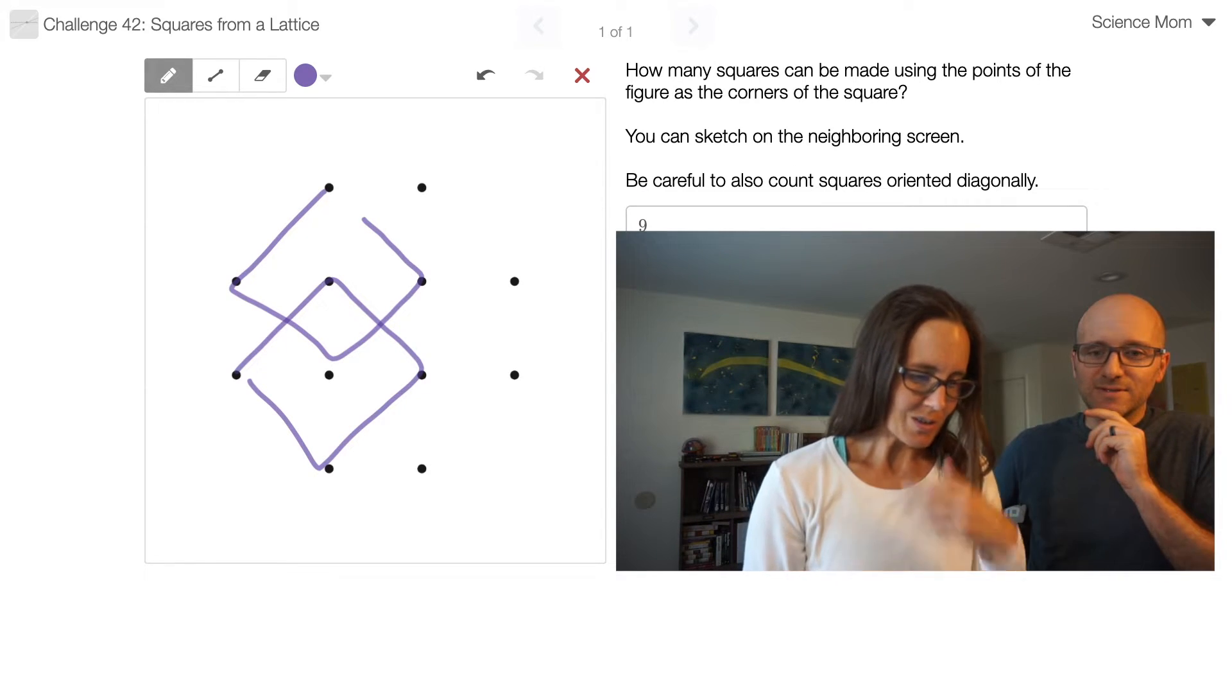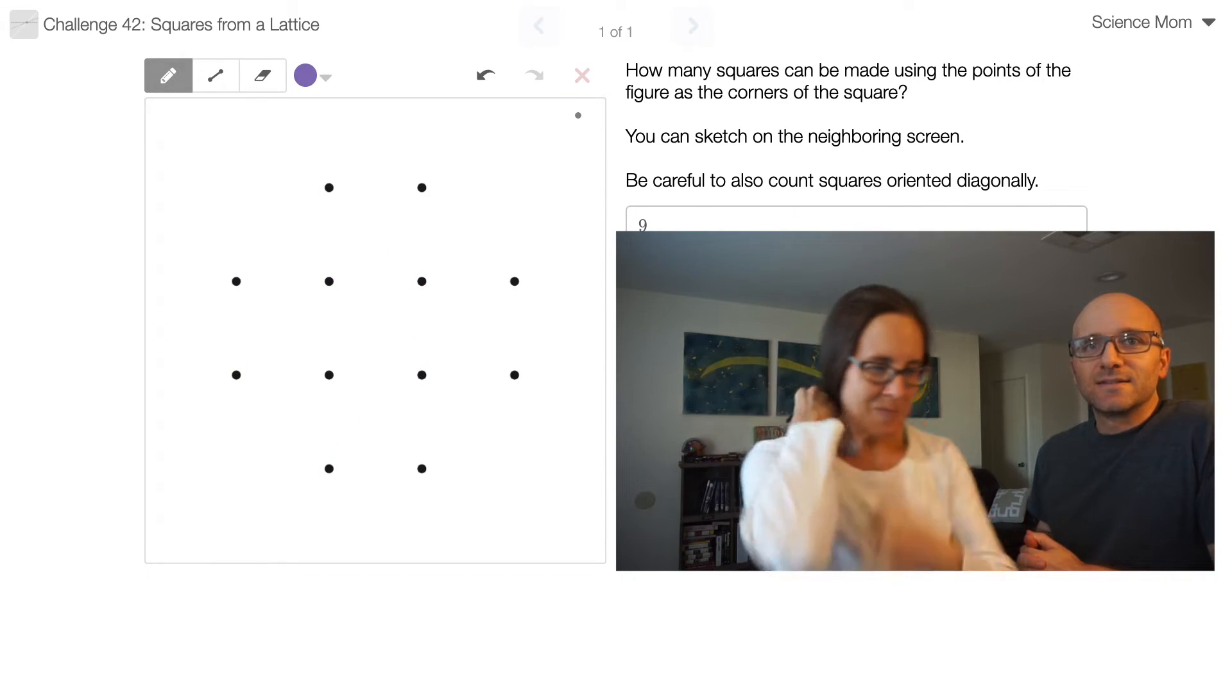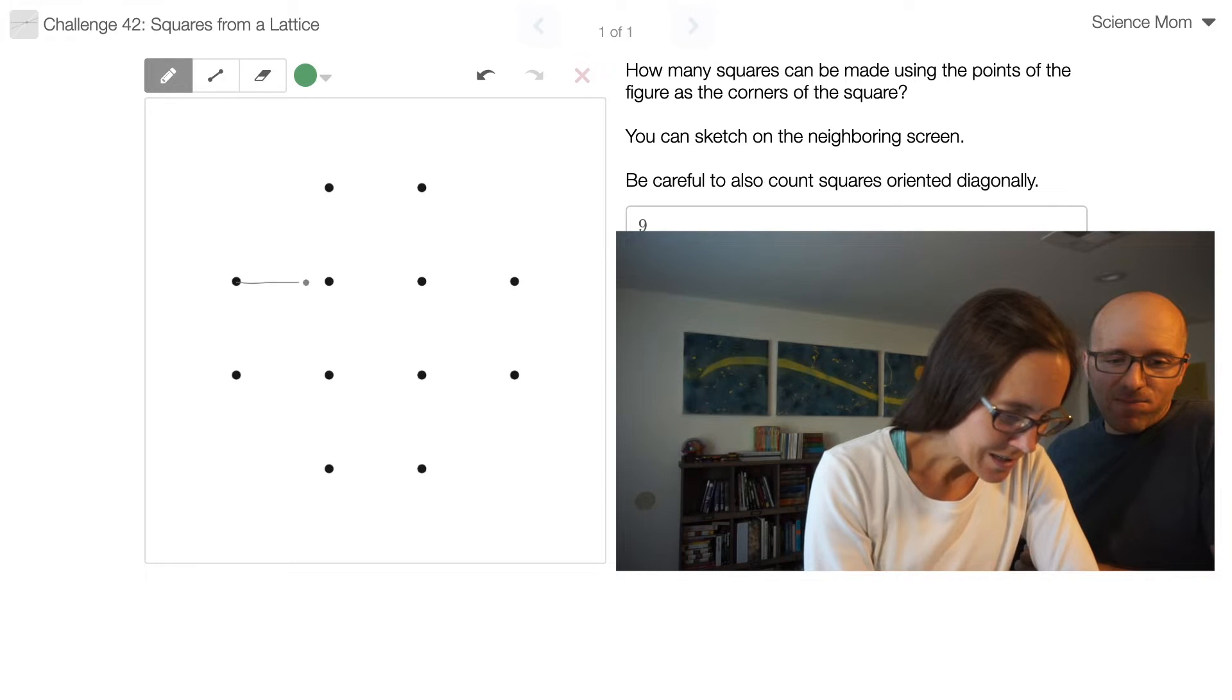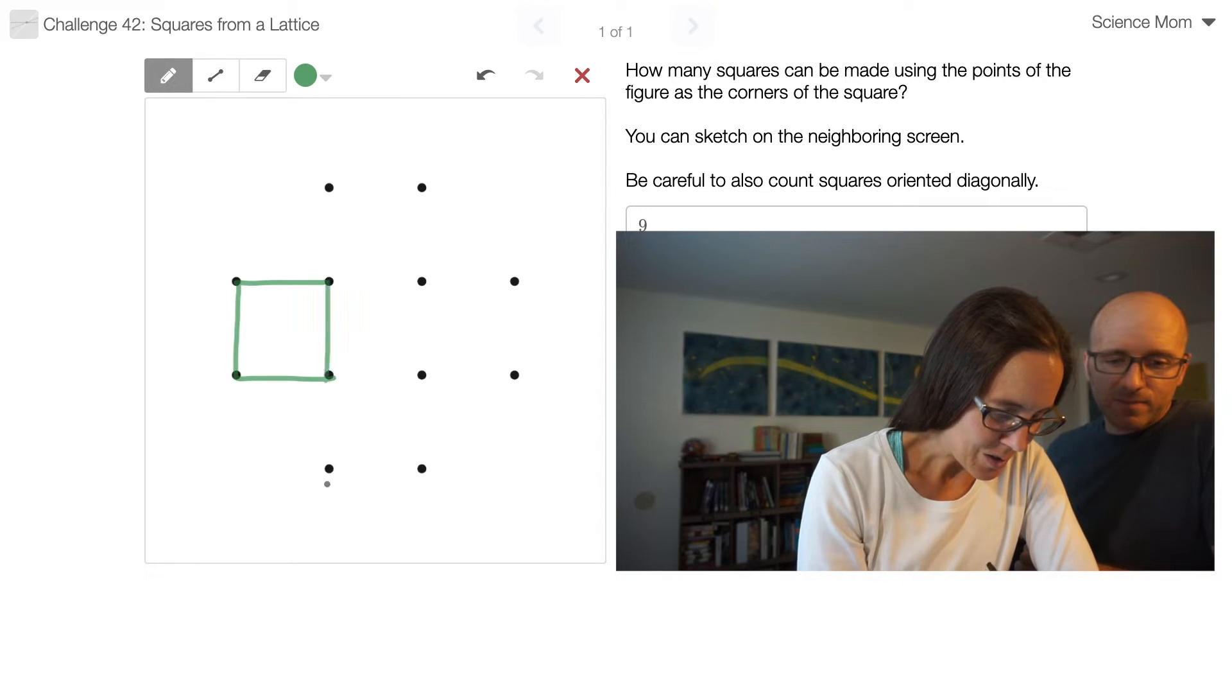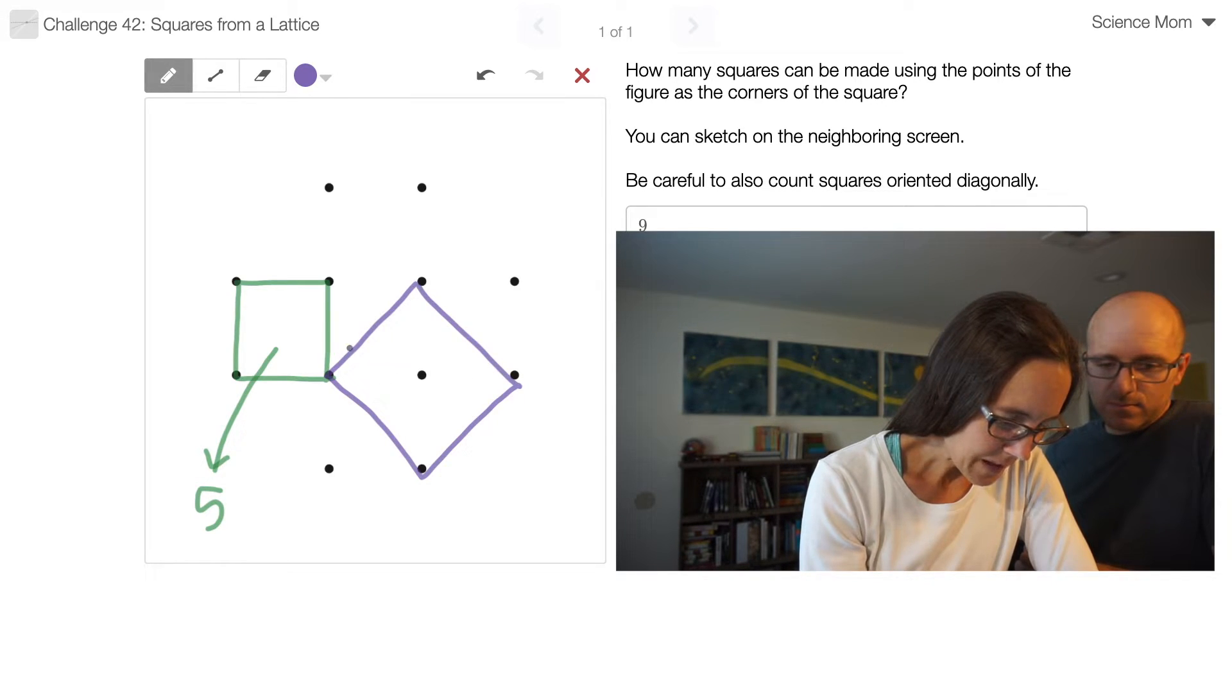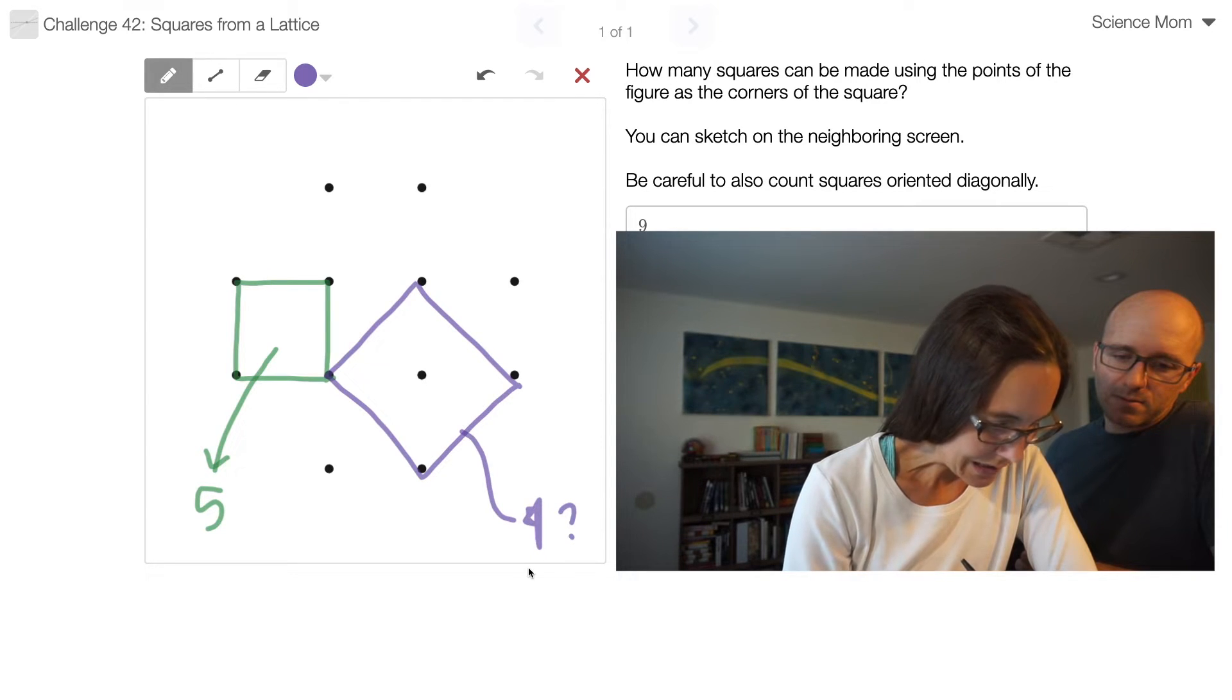Be careful to also count squares oriented diagonally. Okay. You don't get to tell me the answer yet. Let me puzzle on this a little more. So we have our easy peasy squares that are just like that. And there are five of those. We have our diagonally oriented squares that are a little bigger. And there were four of those. I am pretty sure that's supposed to be a four, not a nine. Thank you, autocorrect line.